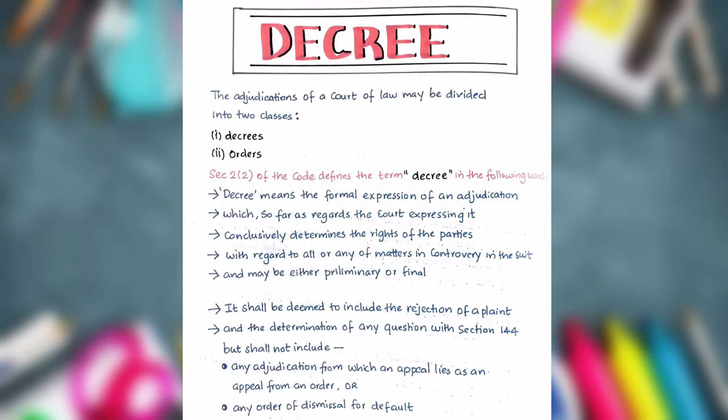The adjudications of a court of law may be divided into two classes: number one, decrees, and number two, orders. Let's read out the section on decree. Section 2, sub-clause 2 of the code defines the term decree as follows: Decree means the formal expression of an adjudication which, so far as regards the court expressing it, conclusively determines the rights of the parties with regard to all or any of the matters in controversy in the suit, and may be either preliminary or final.